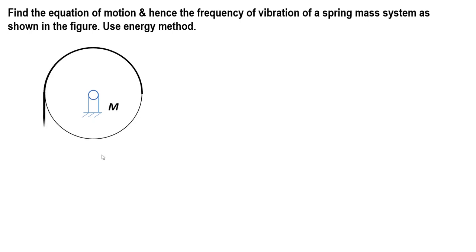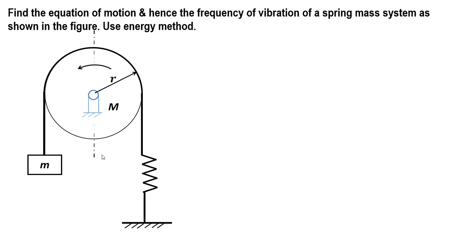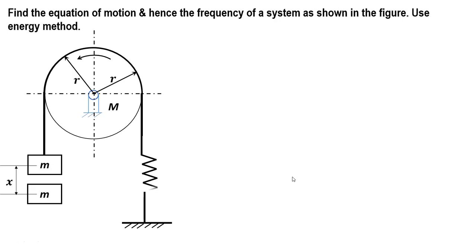In this video we'll try to understand how to find the equation of motion and hence the frequency of vibration of a spring-mass system as shown in the figure. m is the mass which will be displaced in the downward direction. Capital M is the mass of this particular disc around which this mass is wrapped. k is the stiffness of the spring. If this mass is displaced in the downward direction, there will be an elongation of the spring of stiffness x, and the mass will start oscillating about the mean equilibrium position.